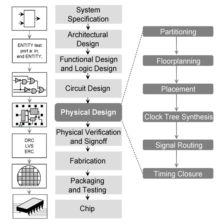The ASIC physical design flow uses technology libraries provided by the fabrication houses. Technologies are commonly classified according to minimal feature size. Standard sizes, in the order of miniaturization, are 2 µm, 1 µm, 0.5 µm, 0.35 µm, 0.25 µm, 180 nm, 130 nm, 90 nm, 65 nm, 45 nm, 28 nm, 22 nm, 18 nm, 14 nm, etc. They may also be classified according to major manufacturing approaches: N-well process, twin-well process, SOI process, etc.